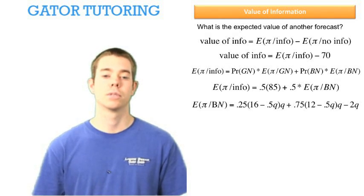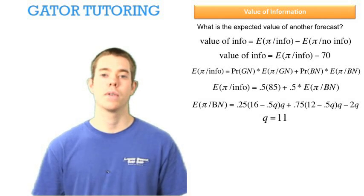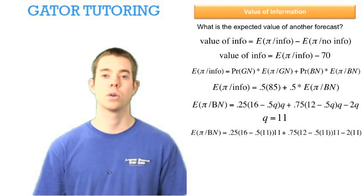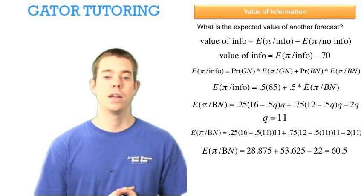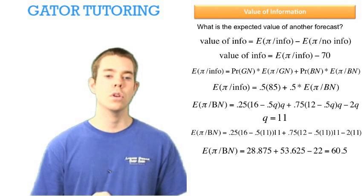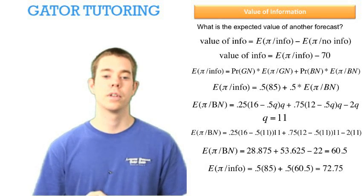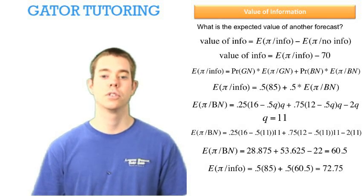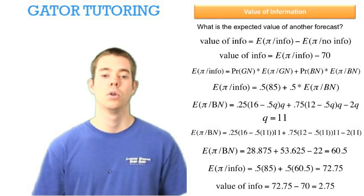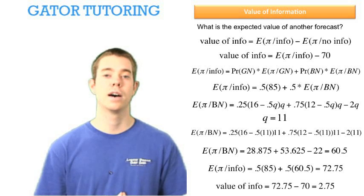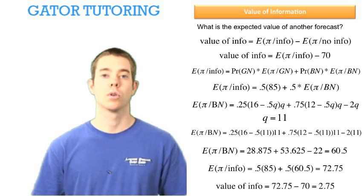We've already done most of the work: using our profit function with Q=11, we plug in 11 everywhere and solve for expected profit given bad news, which is $60.50. Going back to the expected profit given information formula and plugging in $60.50, we find expected profit given information is $72.75. Therefore, the value of information is $72.75 minus $70, which equals $2.75.